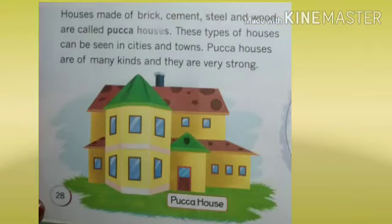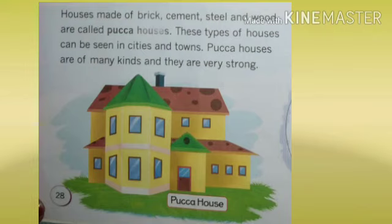Houses made of brick, cement, steel, and wood are called pakka houses. These types of houses can be seen in cities and towns.